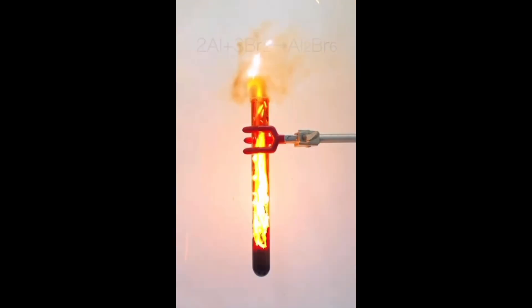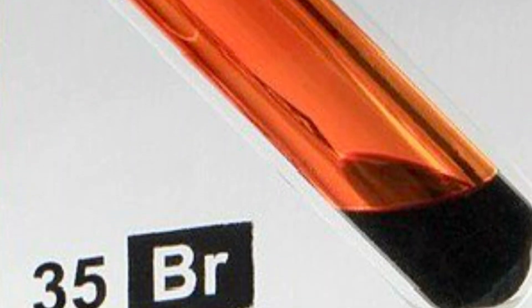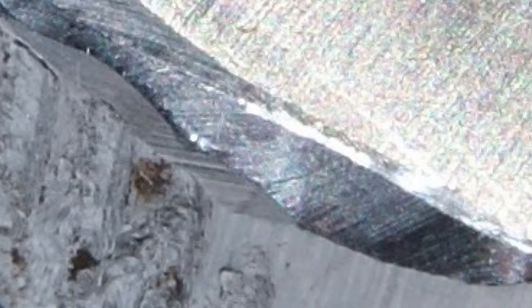The result? Aluminium bromide, a compound formed as aluminium donates electrons to bromine. It's a classic redox reaction. A spectacular display of chemistry's power. Aluminium and bromine. Two ordinary elements, one extraordinary reaction.